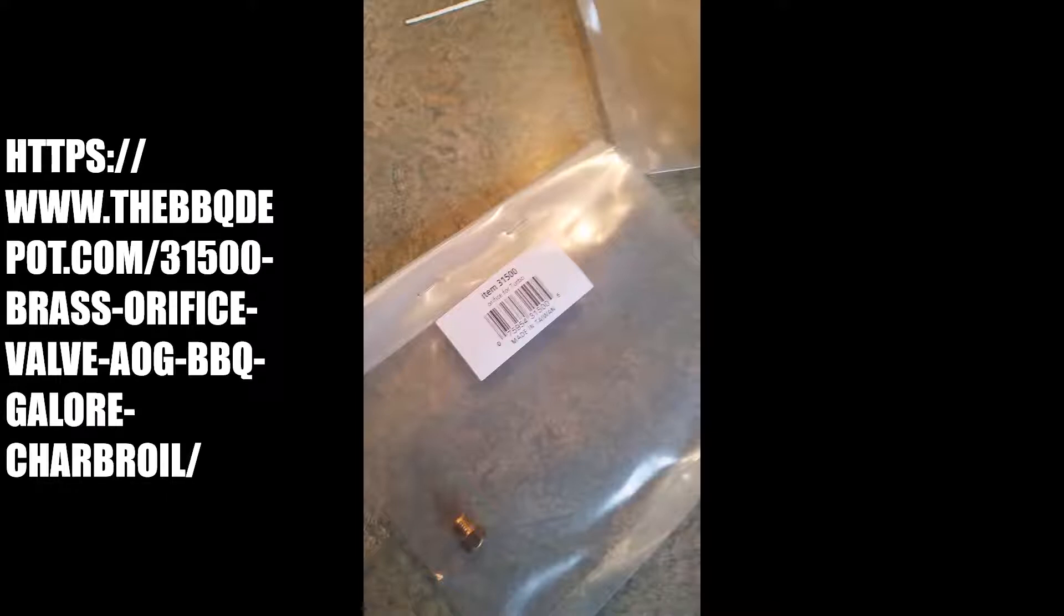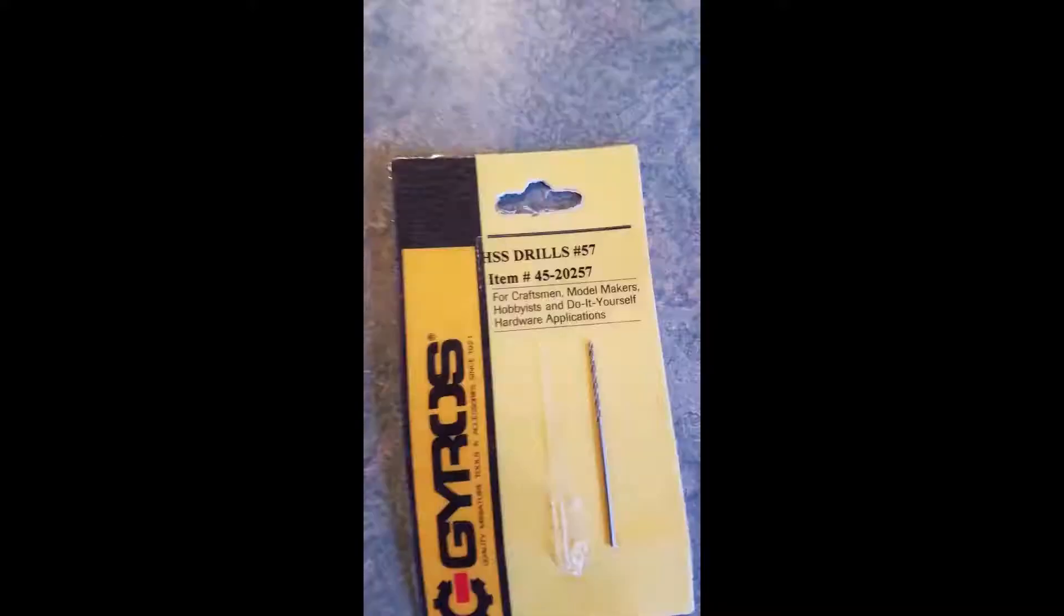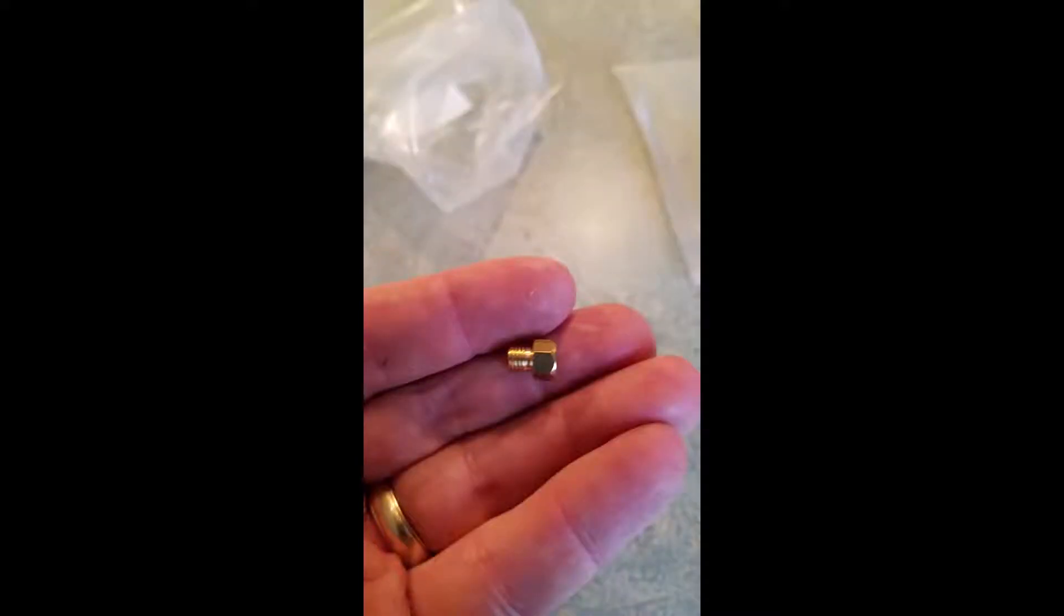They come pre-drilled with a real small hole, but it's a little too small. So once I determined which orifice fit the valve the best, I then took my number 57 drill bit and drilled out the hole to number 57. Then it's time to install that new orifice into the end of the valve.